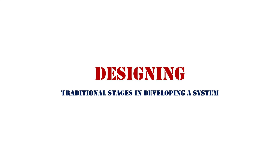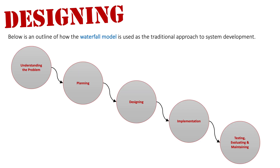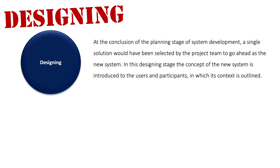We're now going to look at the third stage in the traditional approach to system development, which is designing. As you can see visually, we're at the halfway point. At the conclusion of the planning stage, a single solution would have been selected by the project team — the one that came out best from the feasibility study — and that is what we're going ahead with.